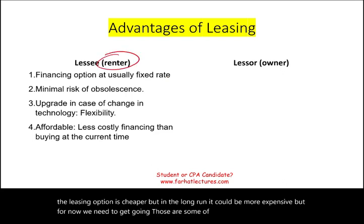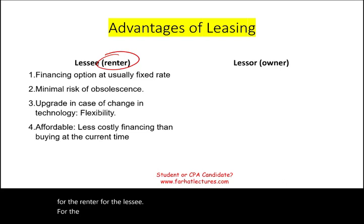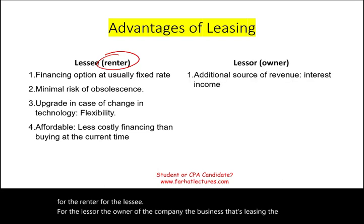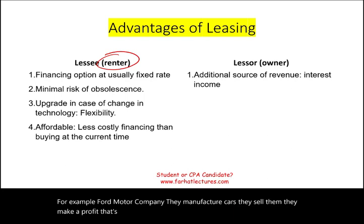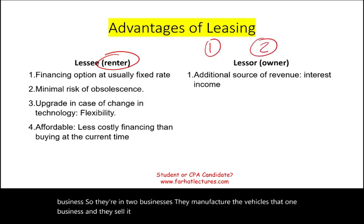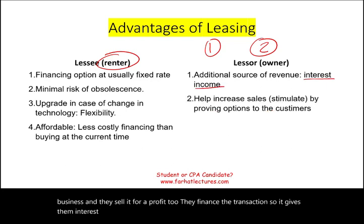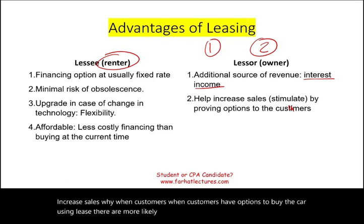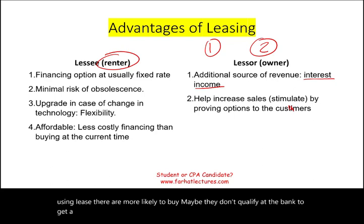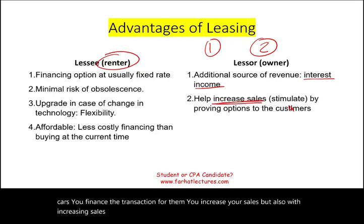Those are some of the advantages for the lessee. For the lessor — the owner leasing the property — one advantage is an additional source of revenue. For example, Ford Motor Company manufactures and sells cars for a profit, and then they also finance the transactions, which gives them interest income — so they're in two businesses. It also helps stimulate and increase sales: when customers have the option to buy a car using a lease, they are more likely to buy, even if they don't qualify for a bank loan or lack a down payment.